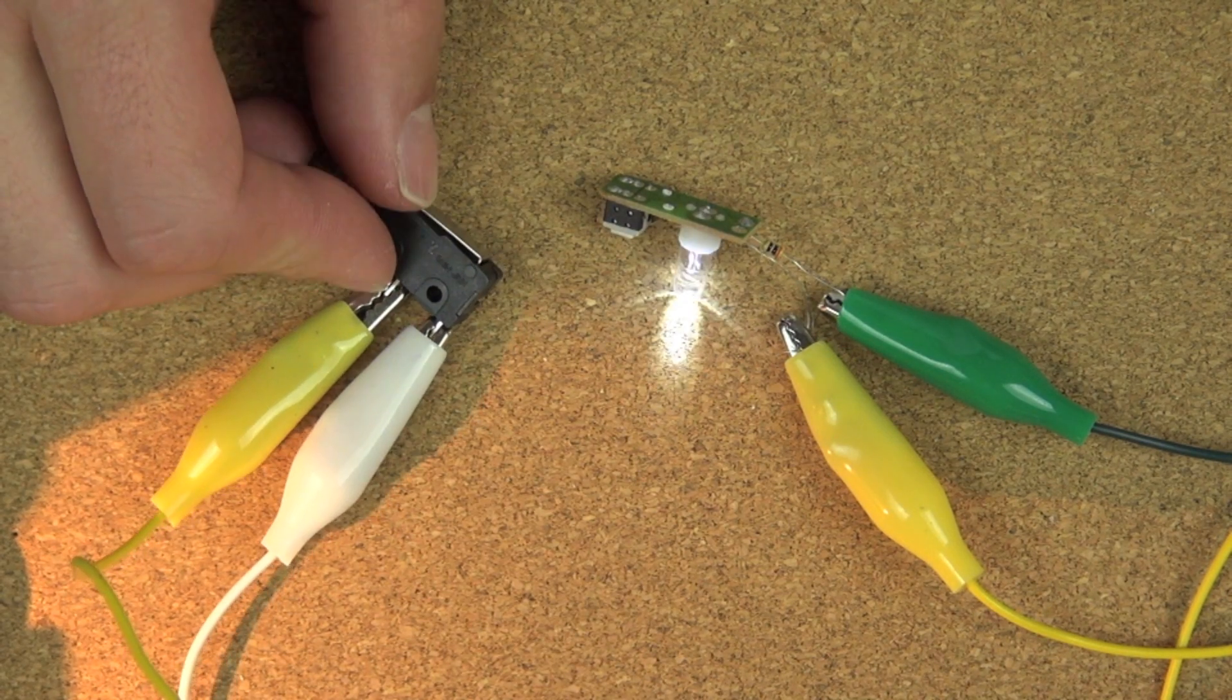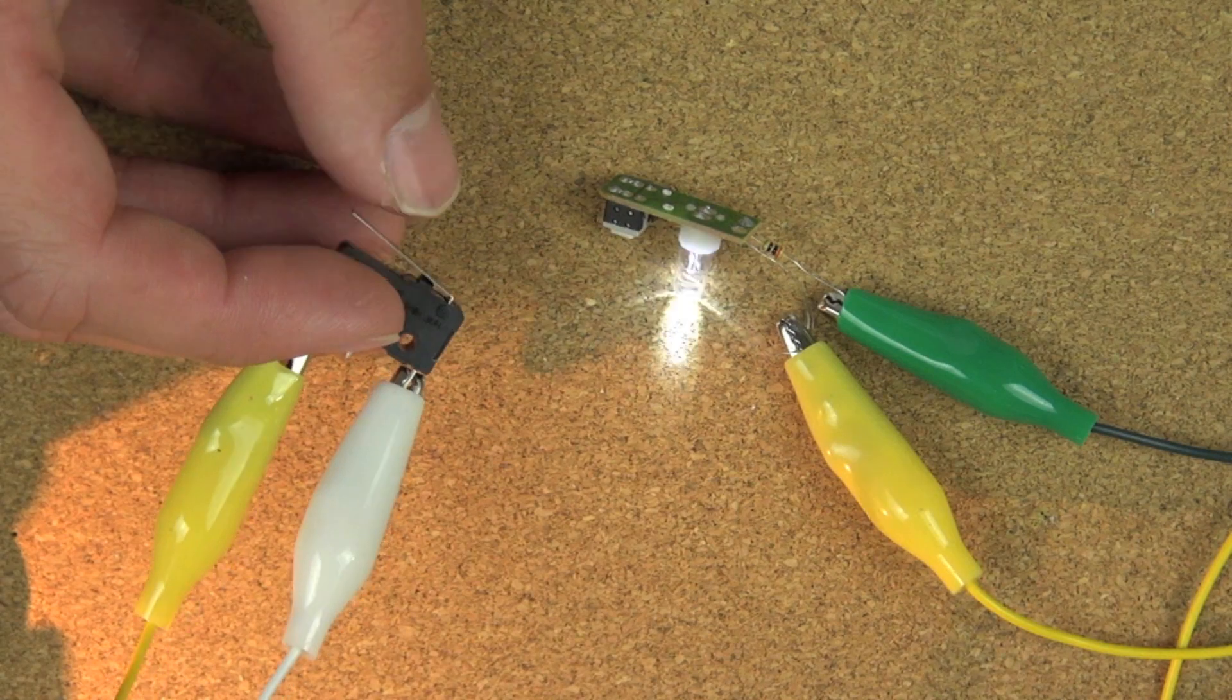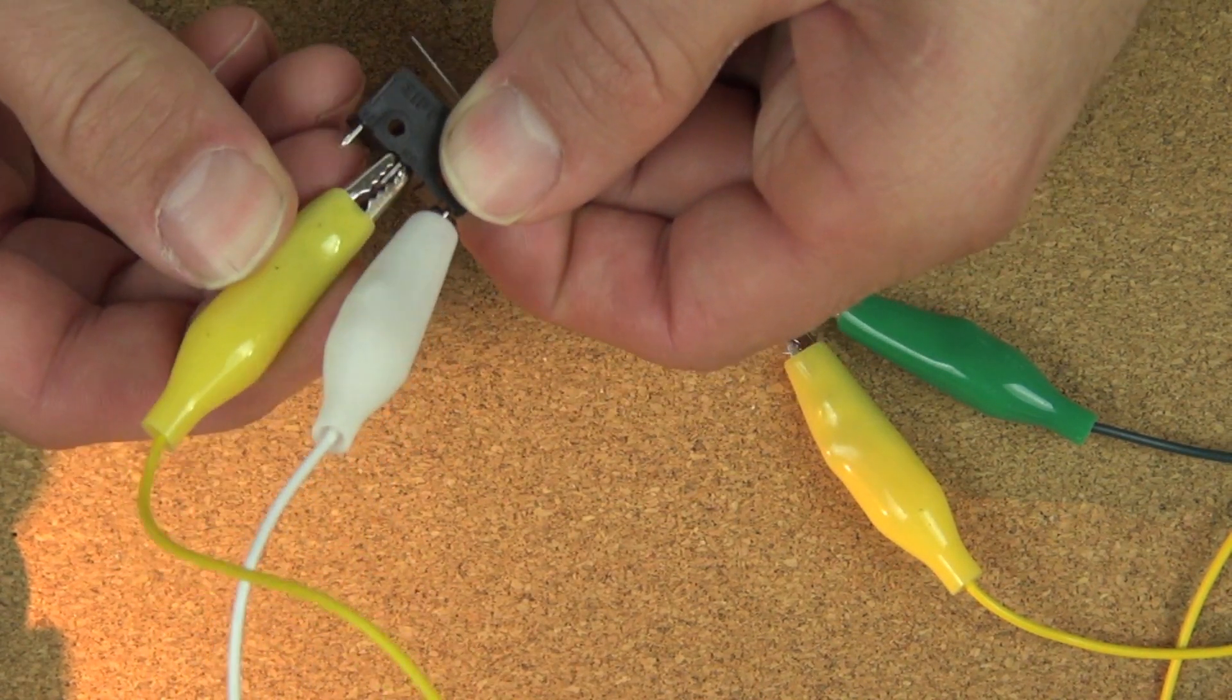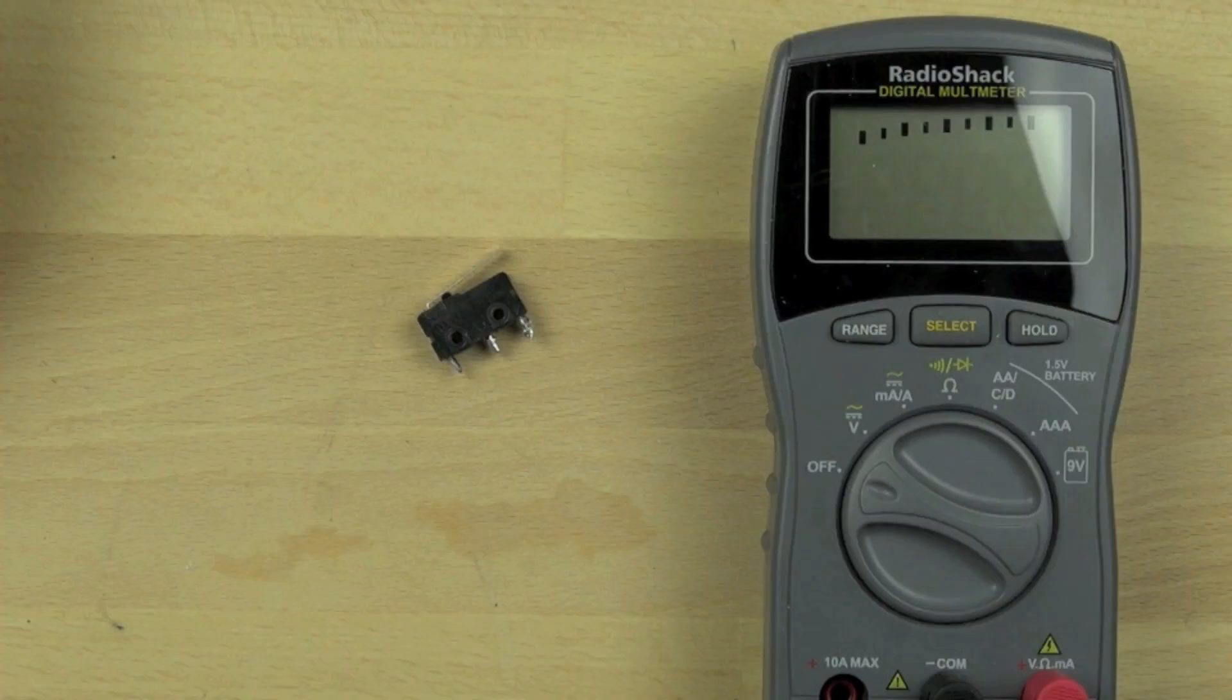And you can see the LED light up there. And then when we switch the power to 1 and 2, the LED turns off when we push the switch instead of turning on. So we want to connect the wires to 1 and 3.